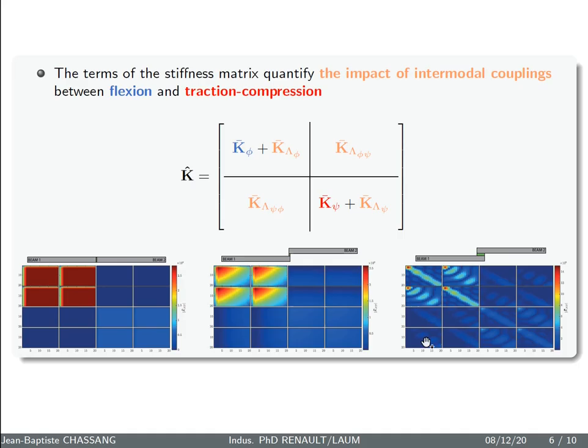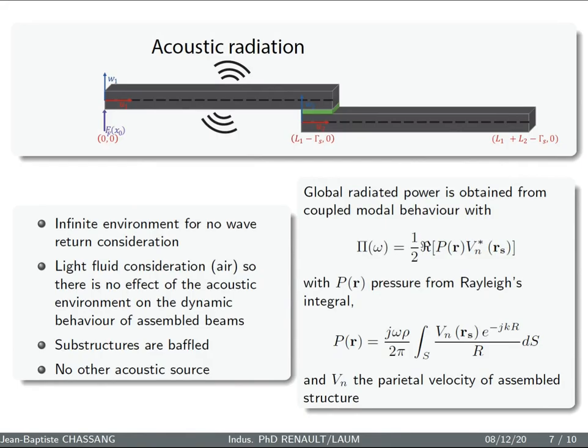But if you start having a non-face-to-face configuration, you have some very low term here in traction. And if you widen the sharing zone between the two beams, you start having some big value in the second and third quarter of this matrix.